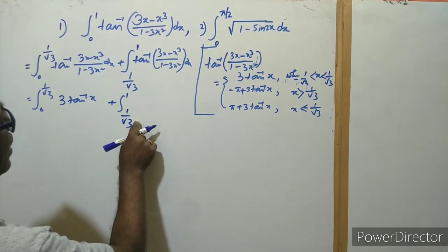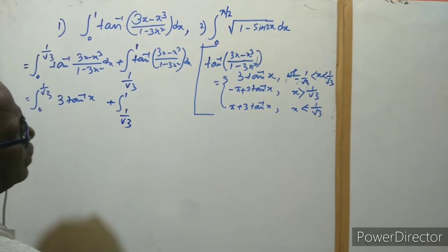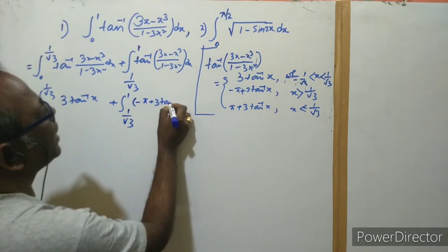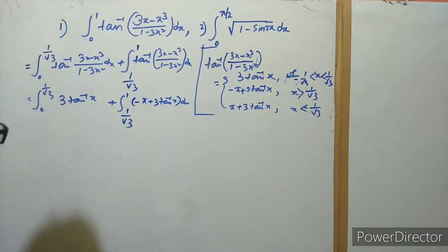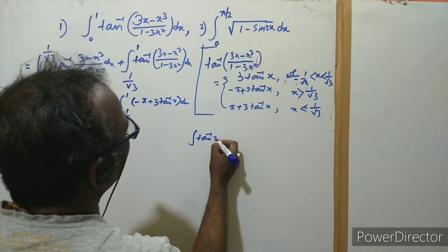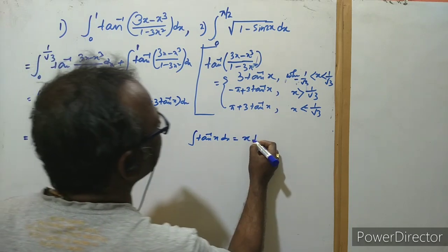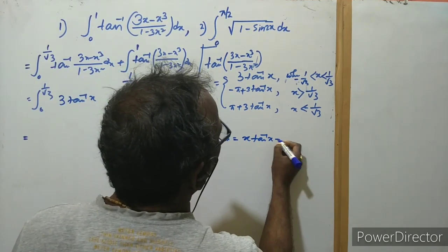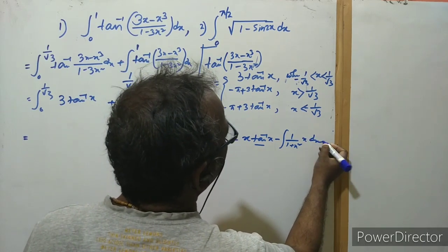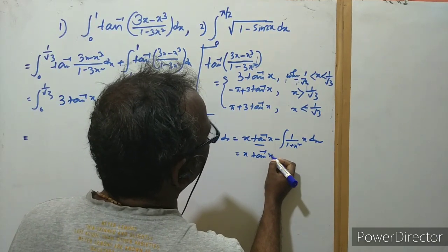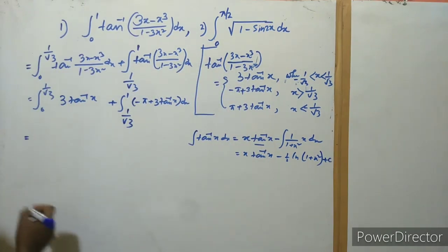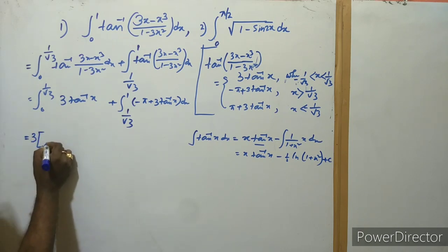From 1/√3 to 1, since x is greater than 1/√3, the expression becomes -π + 3·tan⁻¹(x). Now for the integration of tan⁻¹(x), using integration by parts: the integral of tan⁻¹(x) dx = x·tan⁻¹(x) - ½·ln(1 + x²) + C.